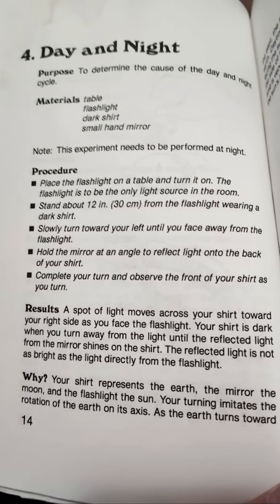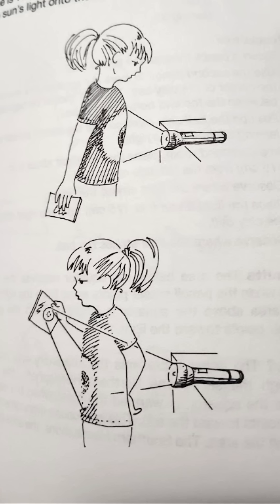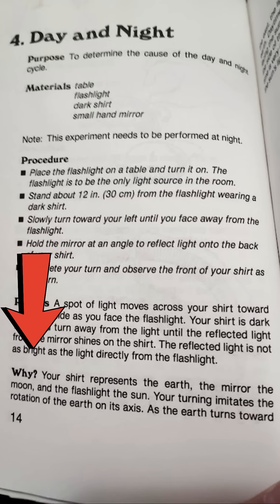Demonstration number four: Day and Night. Purpose — to demonstrate the cause of the day and night cycle. All you need is a table, a flashlight, a dark shirt, and a mirror. Your shirt represents the earth, the mirror the moon, and the flashlight the sun. You just put the light behind you on a table and reflect the light using the mirror onto the dark side of your shirt.